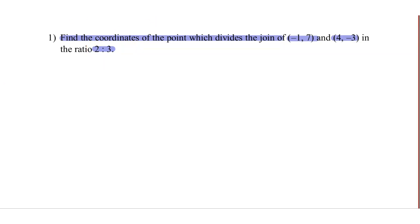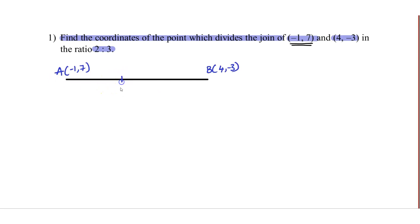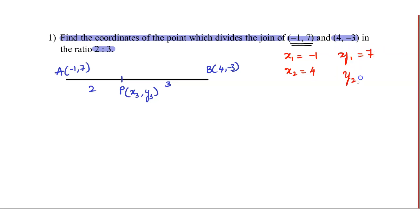So we have to identify the coordinates. The point P divides in the ratio m1:m2, which is 2:3. The coordinates are x3, y3. So: x1 = -1, x2 = 4, y1 = 7, y2 = -3, m1 = 2, m2 = 3.